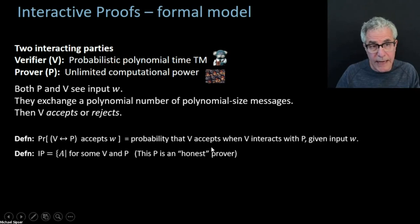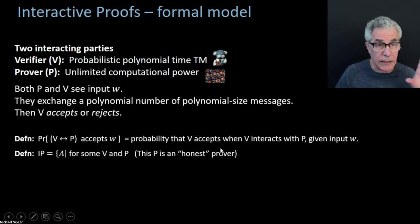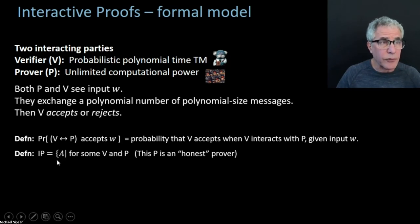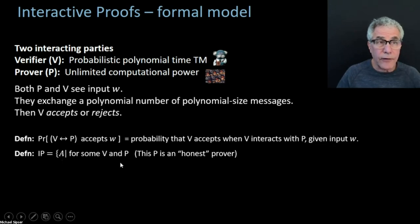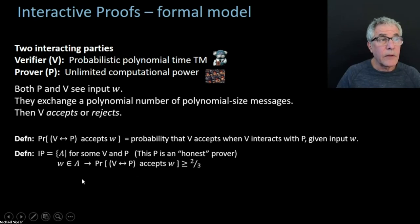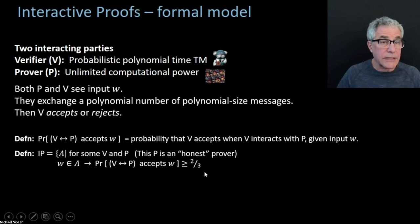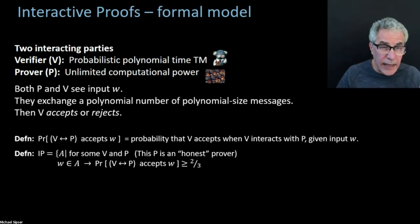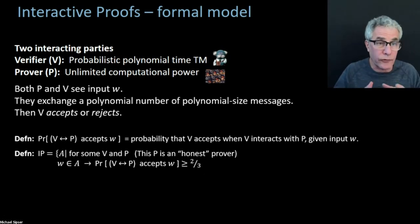So over all the different possibilities for the verifier's computation, we're going to look at the probability that the verifier with this particular prover ends up accepting. This is the probability of the verifier interacting with the prover accepting the input. The class IP — for interactive proofs — is the class of languages such that for some verifier and a prover, for strings in the language, the prover makes the verifier accept with high probability, and for strings not in the language, no prover can make it accept with high probability.